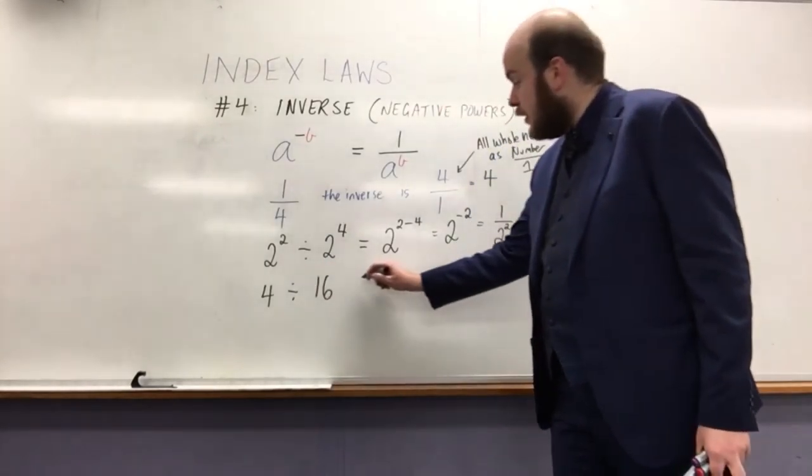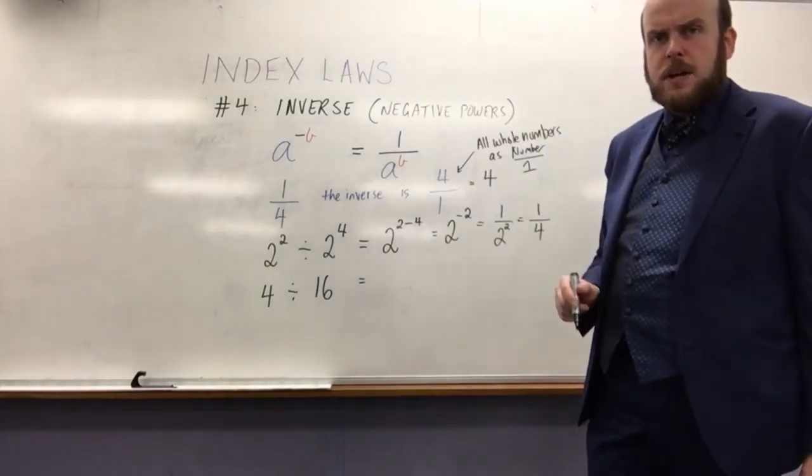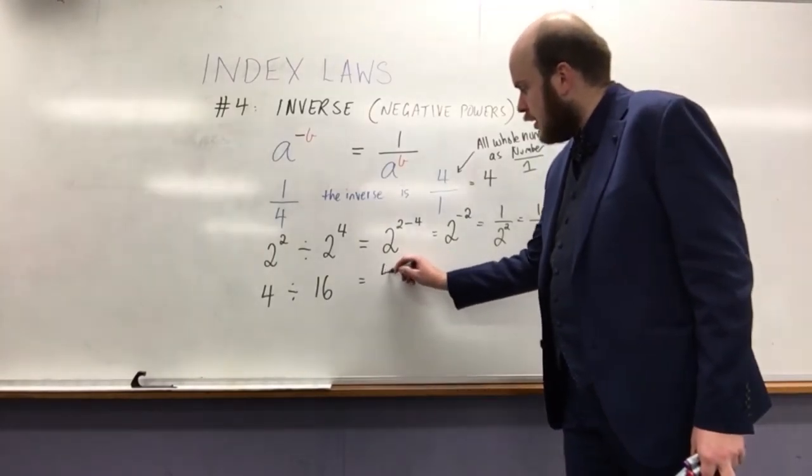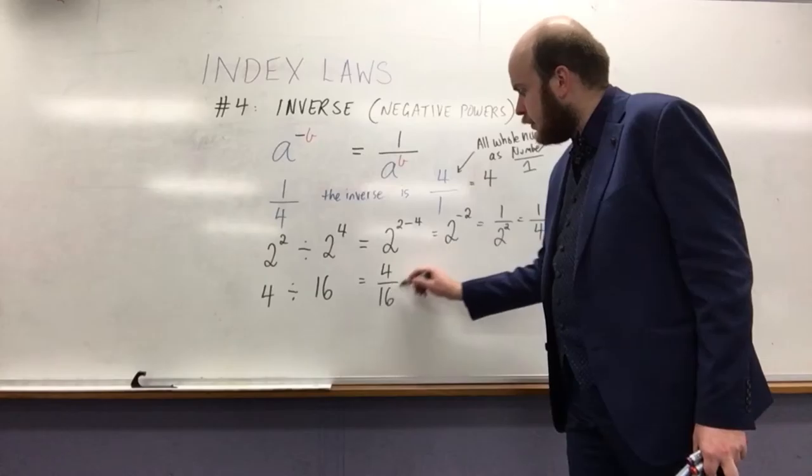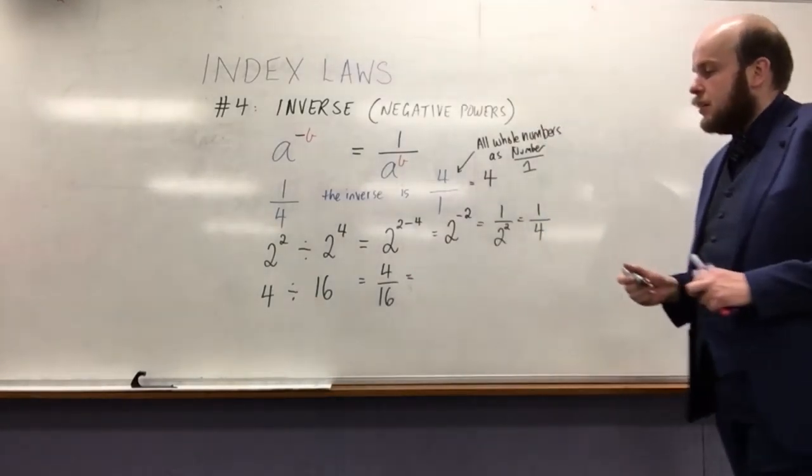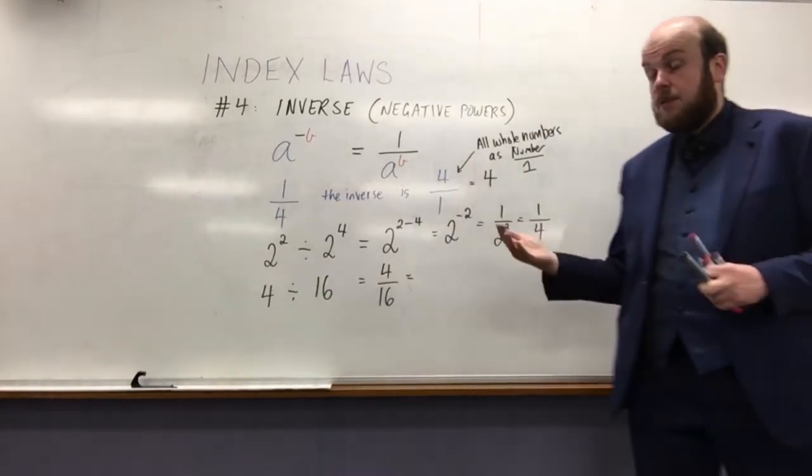So, 4 divided by 16. Now, if I want to write that as a fraction, that would be 4 over 16. So, 4 sixteenths is the same as saying 4 divided by 16.